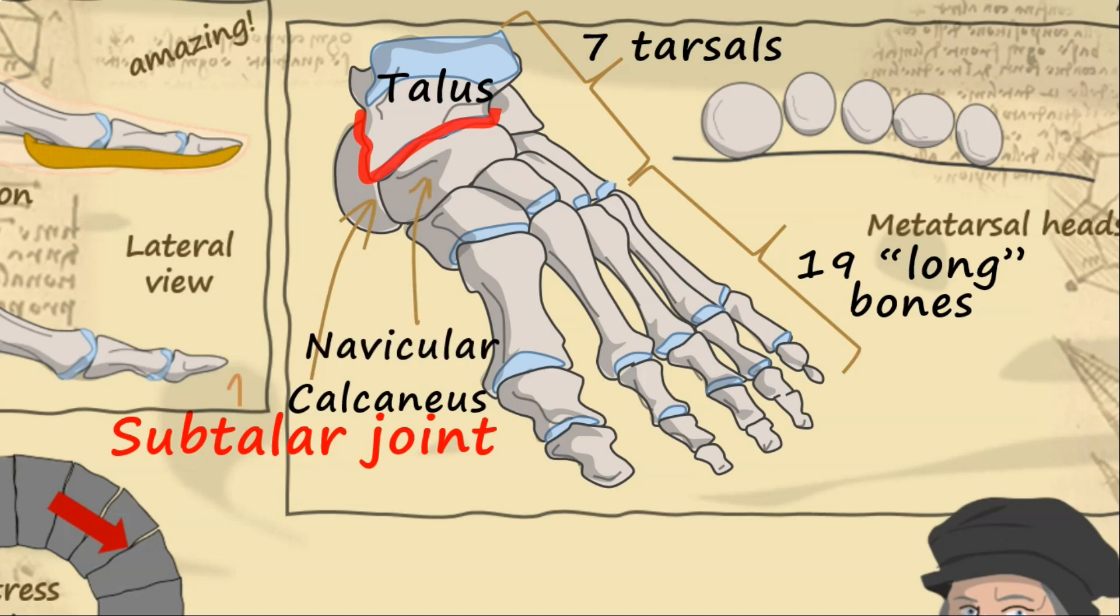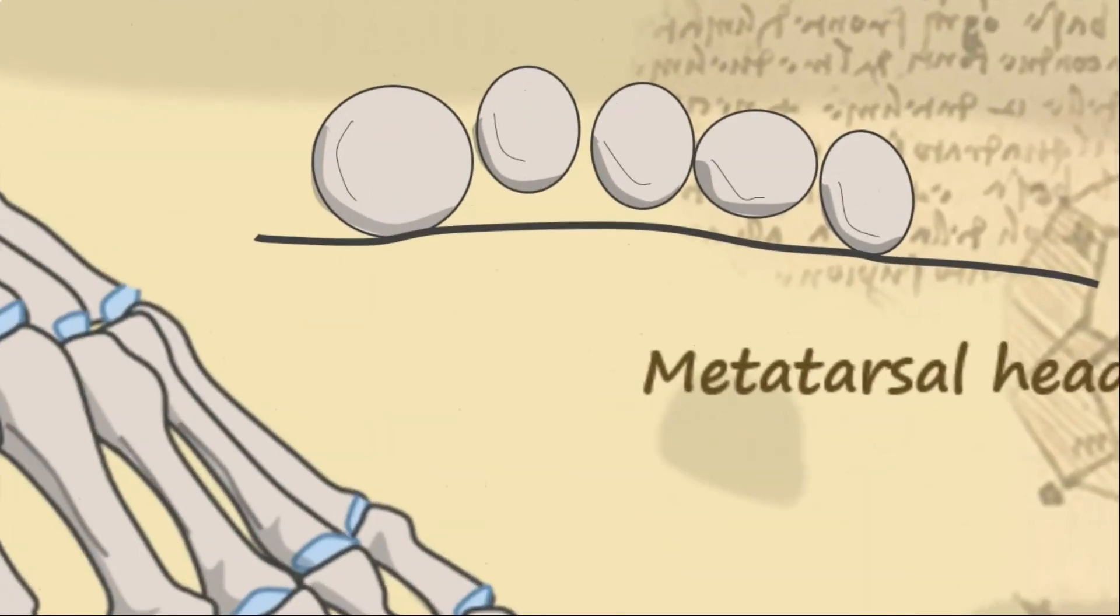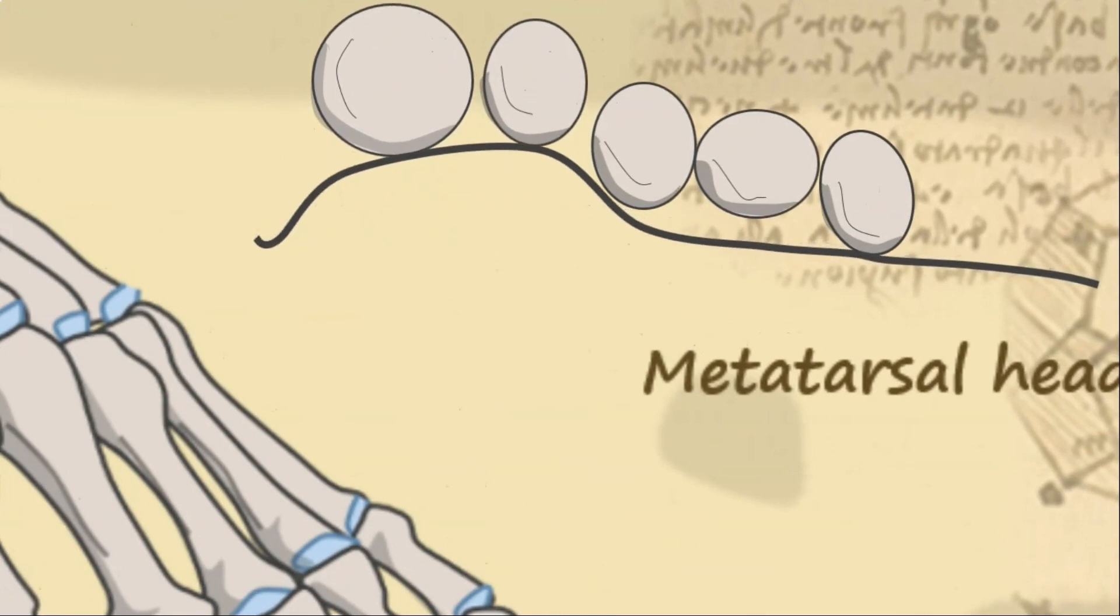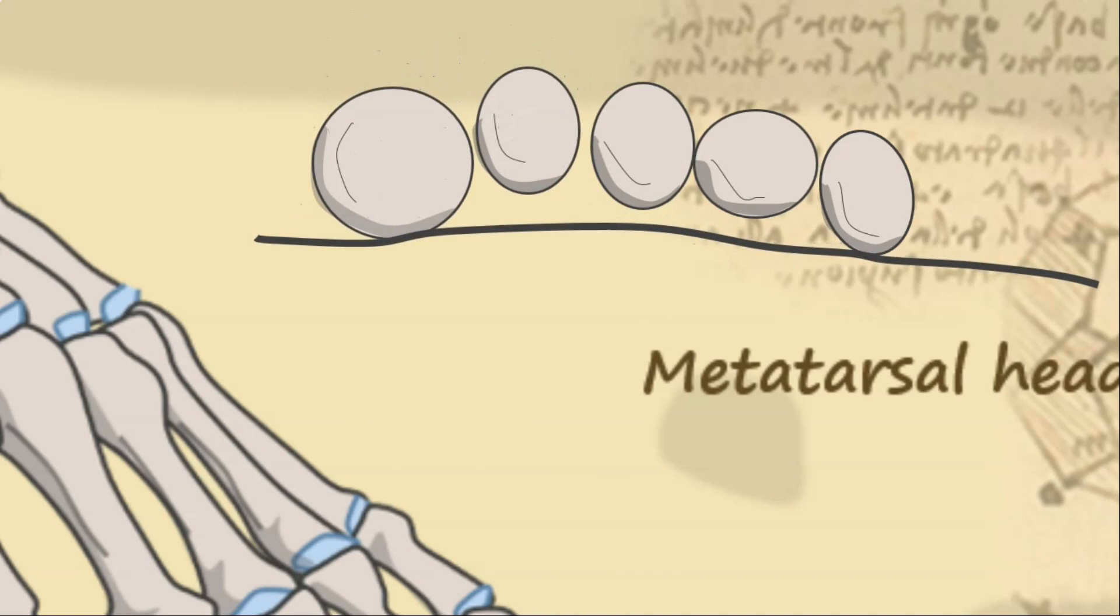The subtalar joint is the largest percentage surface area of any joint in the human body, and subsequently provides a huge range of motion that can help the foot adapt to all sorts of terrains. The first and second metatarsal bones also have a wide degree of up and down motion that allows the foot to change shape with its running surface.